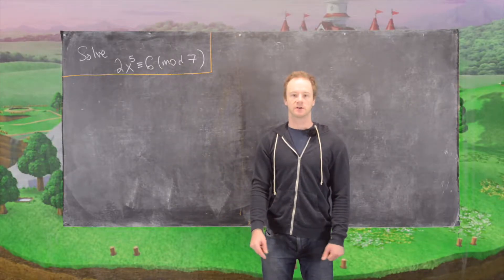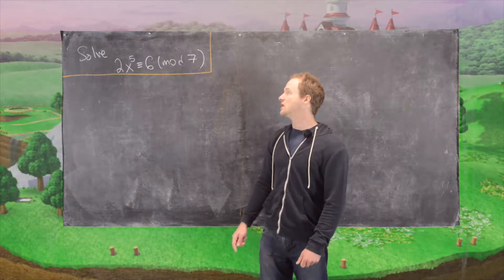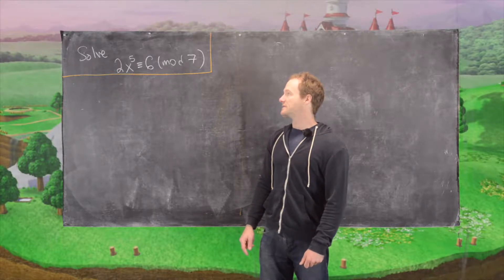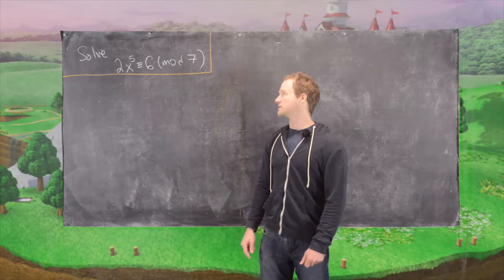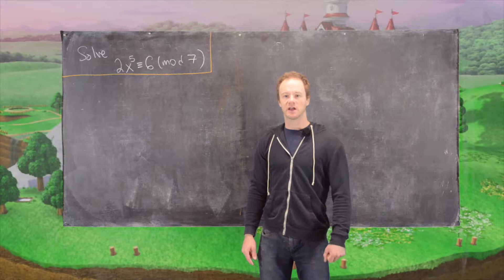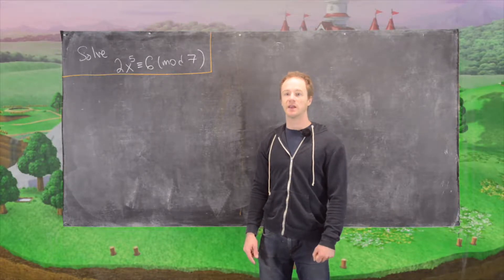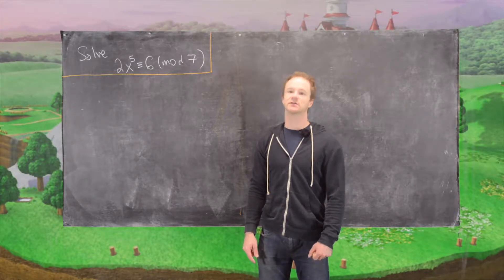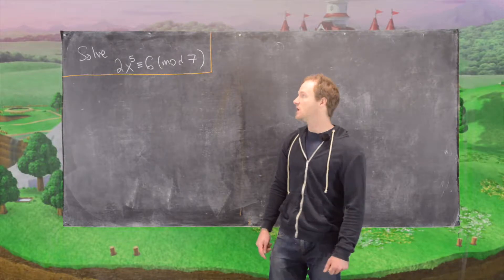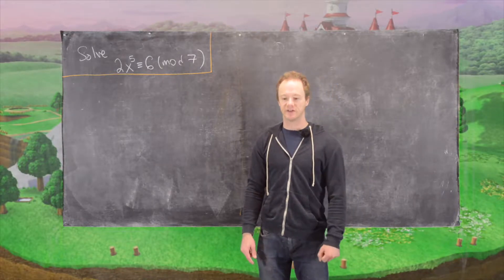In this video we're going to solve the following congruence. So we want to find a solution for 2 times x to the 5th power is congruent to 6 mod 7. We haven't done a proof of a result for when we can test whether or not there is a solution and how many solutions there are. So we'll just find one solution in this case.